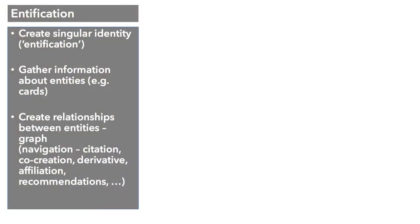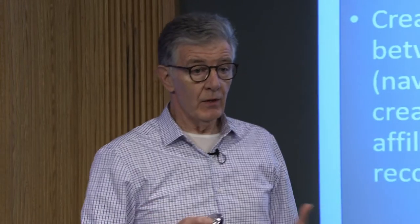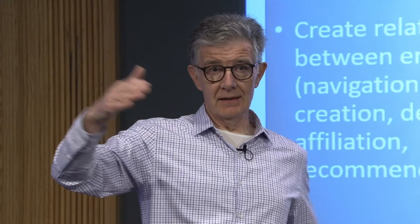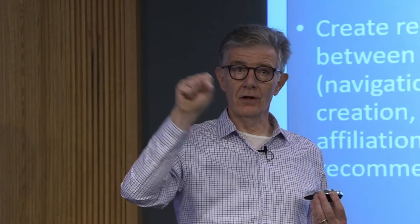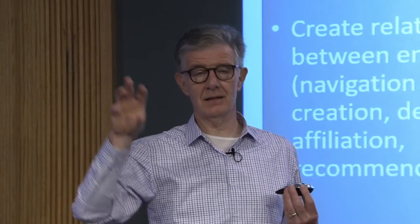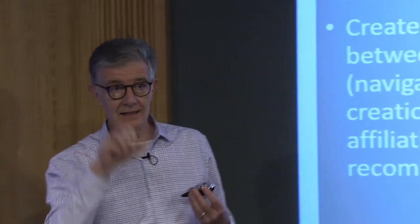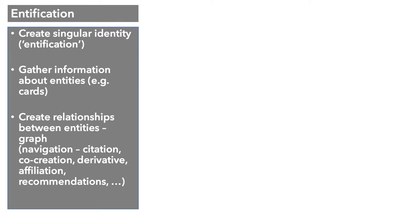Thinking about entification: we very much want to create a singular identity for something and gather information about those entities. Think about Google, for example. When you do a search on Google, they give you a card for the thing you're searching. Rather than just giving you a big list of results, they're trying to say here's the thing you might be looking for, here's some stuff we've collected about those things, and here are some links to other things — those entities. Then you want to create relationships between these. We're used to relationships like citation or derivative work, but then you have things like affiliation — where does somebody work, do they work in a research lab, are they from a particular place — and can you make connections among those things that help us analyze the whole environment?